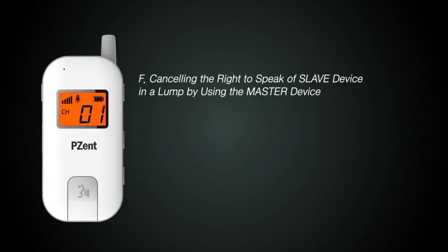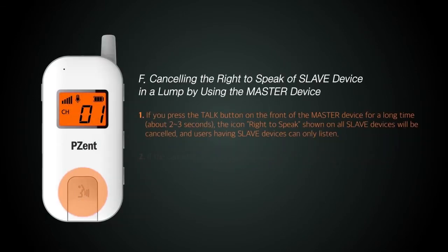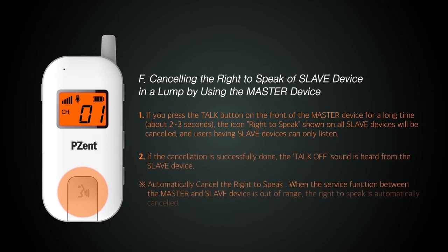In noisy surroundings, the master can control the slave's talk function. When holding down the talk button of the master unit for about 3 seconds, the talk function of all of the slaves is released.